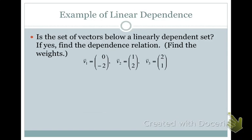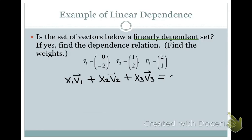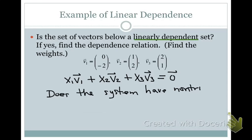In this example we want to know whether or not the set of vectors v1, v2, and v3 form a linearly dependent set. To do that we need to show, based on the definition, that x1·v1 plus x2·v2 plus x3·v3 equal to 0 has non-trivial solutions. If it does, the set is linearly dependent; if it has only the trivial solution, the set is linearly independent.